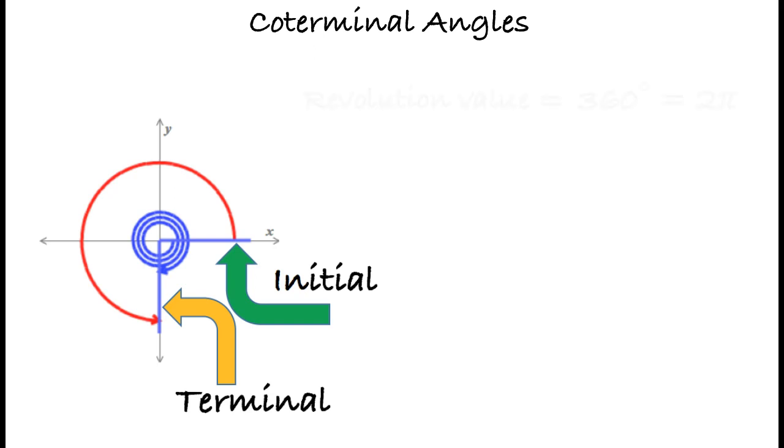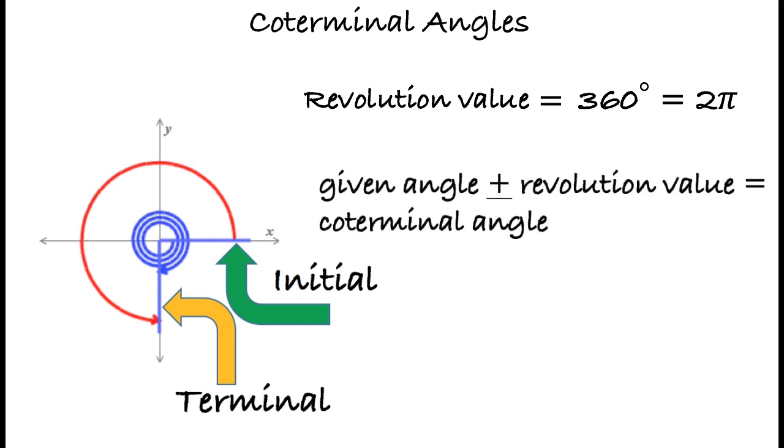One revolution of the circle is 360 degrees or 2 pi radians. So by adding or subtracting the revolution value with the appropriate units from our given angle will result in the coterminal angle.